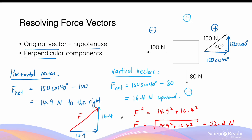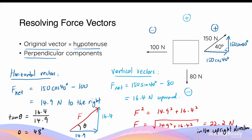Remember that forces are vectors, so in addition to providing a magnitude in newtons, we also need to describe the direction of this net force vector. This can be described by finding the angle between the resultant force vector and the horizontal net force. Tangent theta is equal to the opposite side, 16.4, divided by the adjacent side, 14.9. Theta equals 48 degrees. So the force vector is 22.2N in the upright direction, precisely 48 degrees above the horizontal.